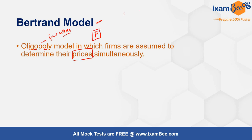So if there are two firms, firm one and firm two, and firm one has set the price equal to P1 for the commodity it wants to sell, then keeping that price in view, firm two will determine what price it will charge for the output it is going to produce. These pricing decisions are made simultaneously in the market.